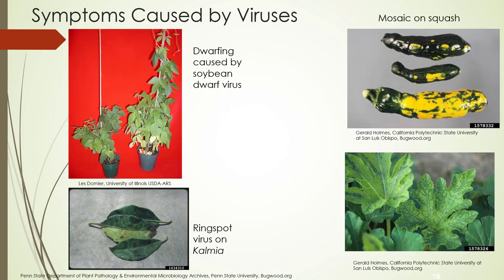Symptoms caused by viruses include dwarfing. You might see a ring spot, or a mosaic pattern either on the leaves or on the fruit.